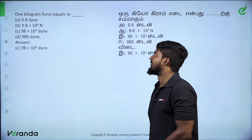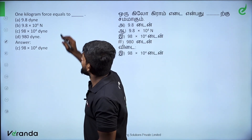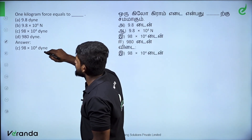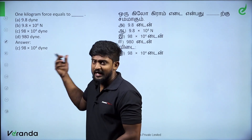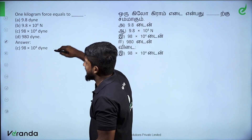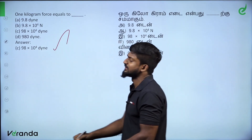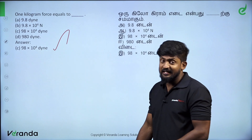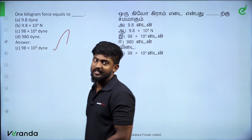1 kilogram force equals 98 × 10⁴ dyne. Next question.